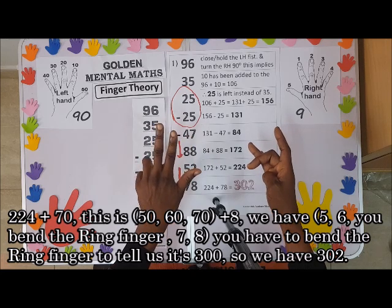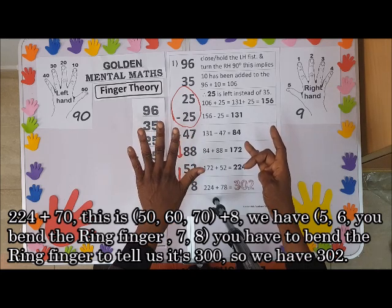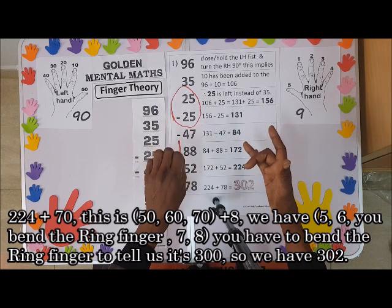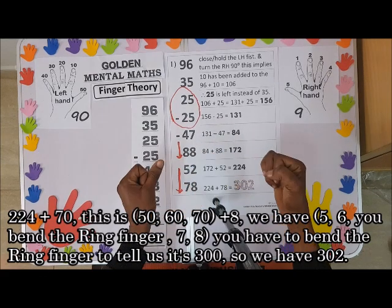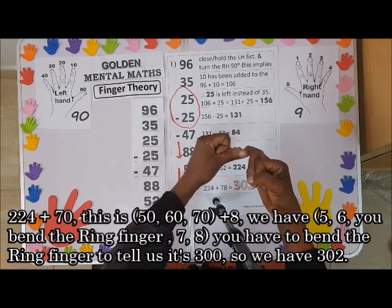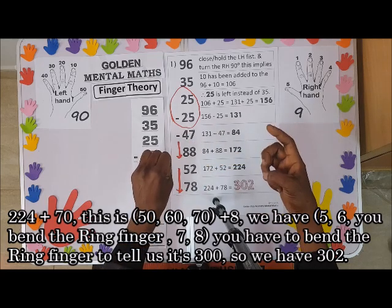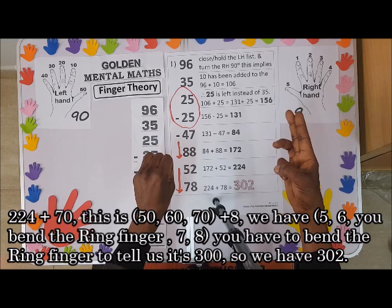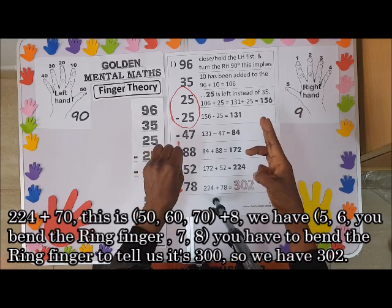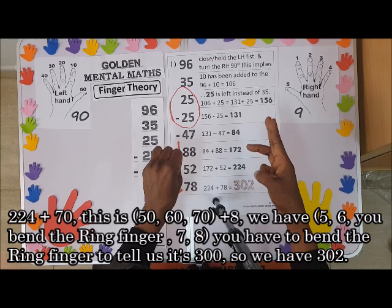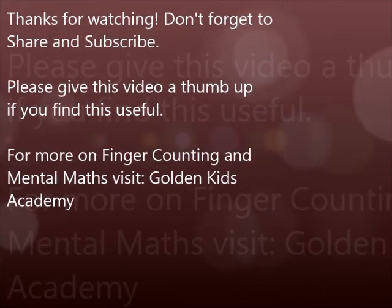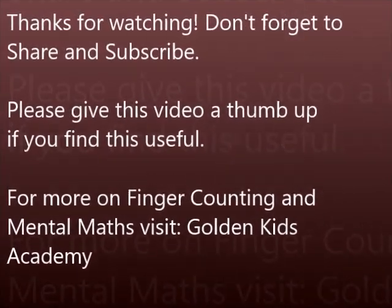Two hundred and twenty-four plus seventy — this is 50, 60, 70, plus 8. We have 5, 6 — you bend this one. That is three hundred: 6, 7, 8. So we have three hundred and two. You bend this one to tell us three hundred and two. Three hundred and eighty-four, three hundred and twenty-four. Thank you.